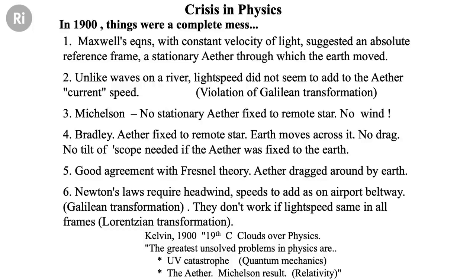There was good agreement with the Fresnel theory. Feuzeau had done experiments running light through running water — water running anti-parallel to the light — and measuring the speed of light as he sped up the water. He got a change, and it fit with Fresnel's theory. So people tended to think Fresnel's old theory of 1820 was probably right. And then the biggest problem of all was that Newton's laws couldn't accept this idea about the speed of light being constant. If you're on a beltway at the airport, walking along at two miles an hour, and the belt's going at three miles an hour with respect to the ground, you're obviously walking at five miles an hour with respect to the ground — the sum of the belt and your own speed. That's Newton's law. And it didn't fit with these results about the speed of light being constant.